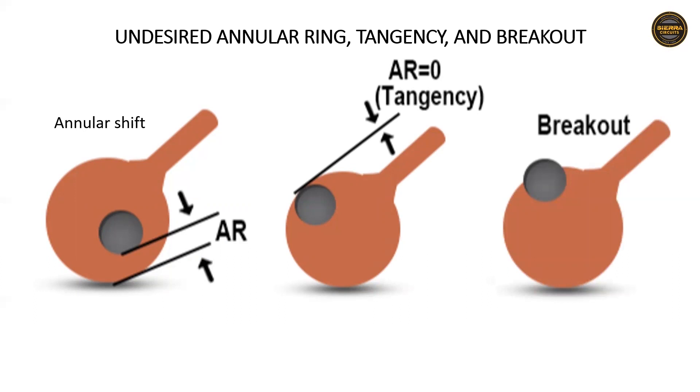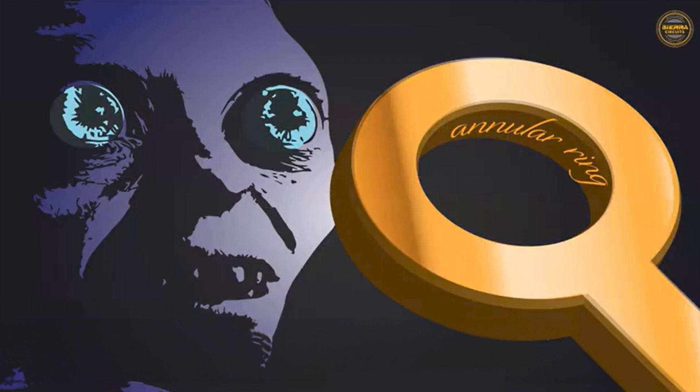The IPC-A-600 standard defines the accepted level of tolerance depending on where the breakout occurs. If an annular ring break exceeds this tolerance, the board will likely be rejected. Considering the annular ring's critical role in PCB design and manufacturing, we at Sierra Circuits call it precious.